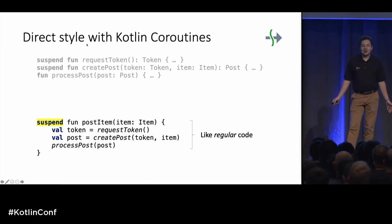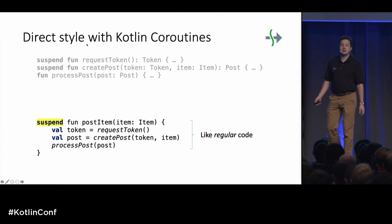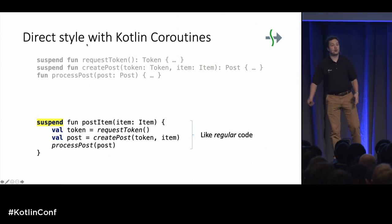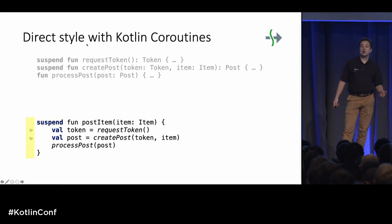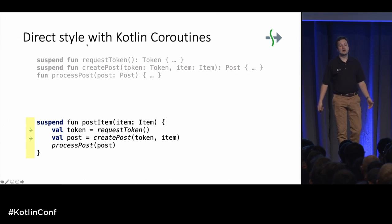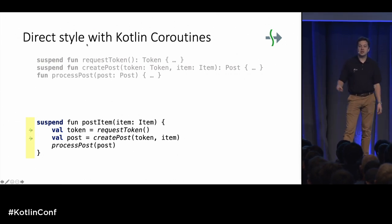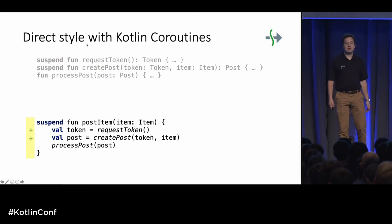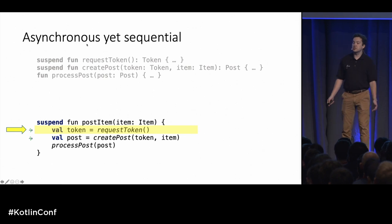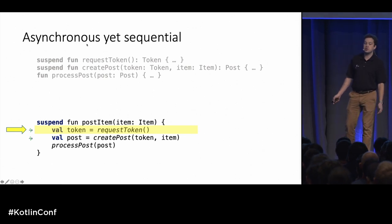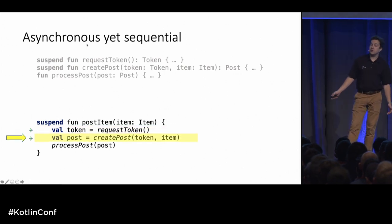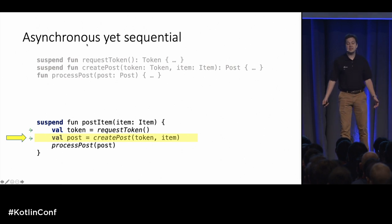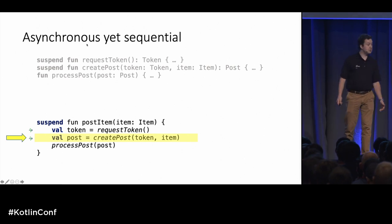With coroutines, we program in direct style. We just write the logic the way we regularly write it. And with coroutines, we still have asynchrony — our code can suspend, wait for a network response, some event. But the logic itself is laid out in a sequential way. It's asynchronous, yet sequential. Step by step: we do one thing, then move to another. So the logic is easy to reason about.